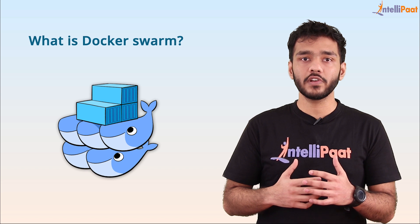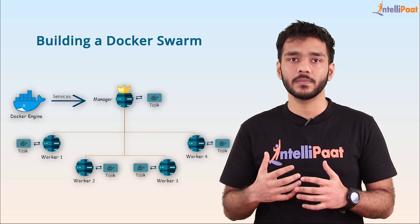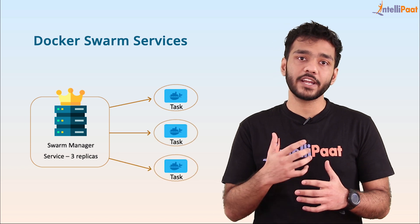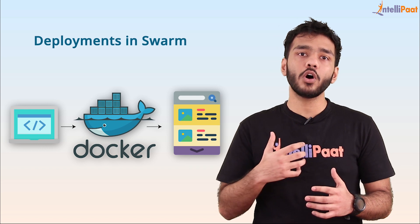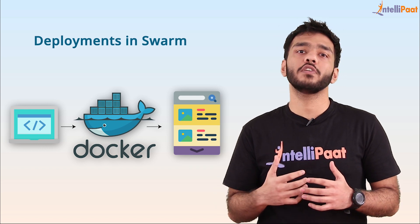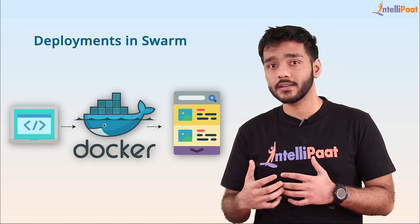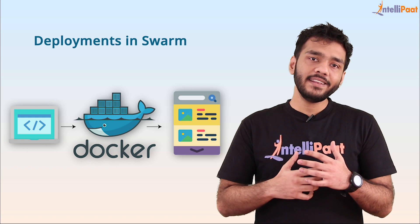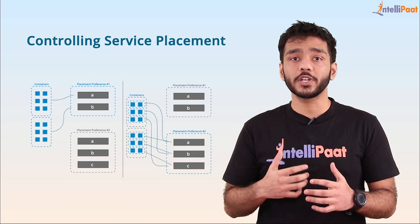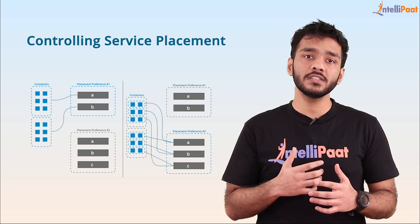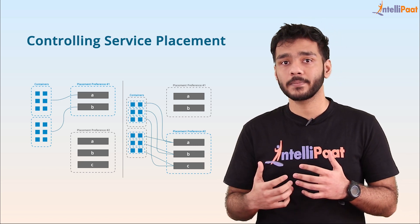After that we will learn how to build our own Docker Swarm, and then we will learn what role a service plays inside of a swarm. After which we will learn how to perform deployments in Docker Swarm and what operations we can perform once the deployment has been completed. And finally, we will learn what controlling service placement is, talking about how we can control a service with constraints in mind.